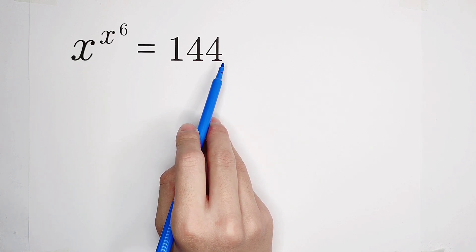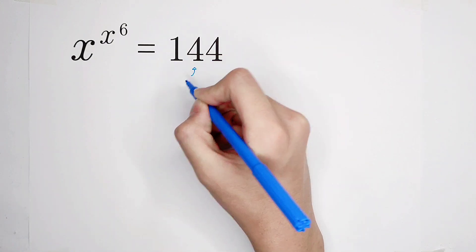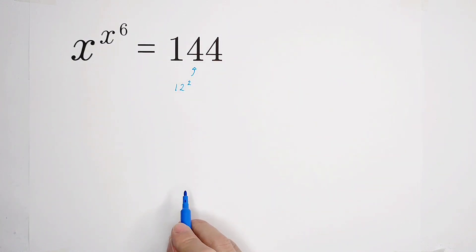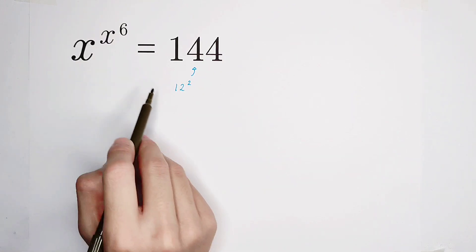It is 12 squared. So now, this number is 12 squared. Oh, nice number. 12, 2, and 6. Are there any relationships among these three numbers? Of course.